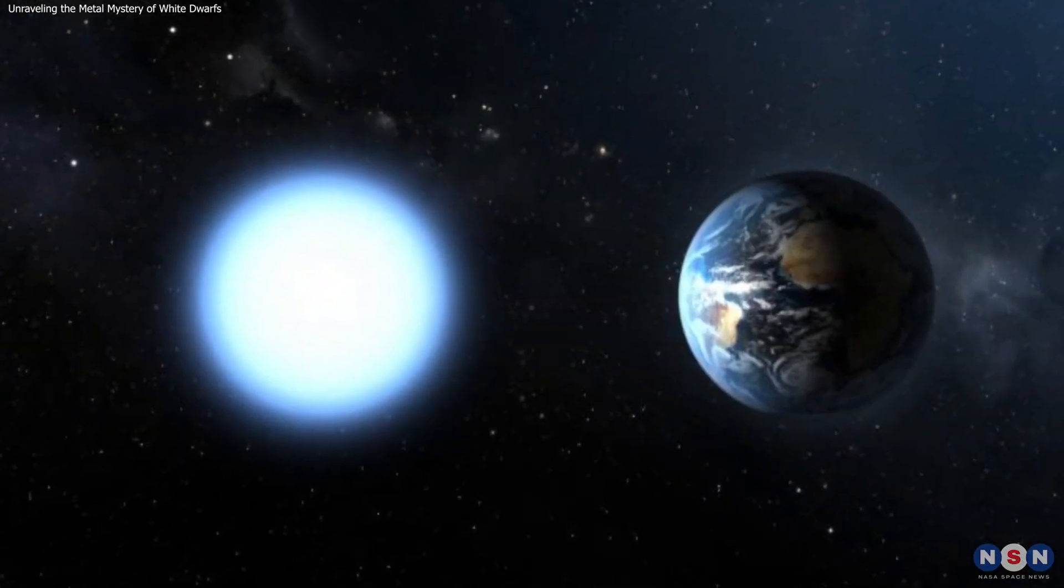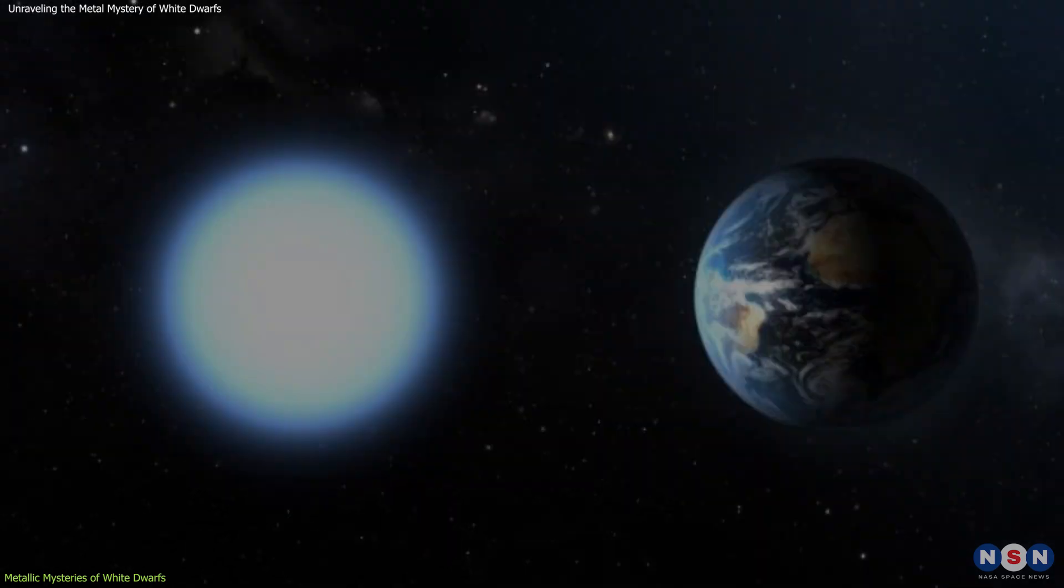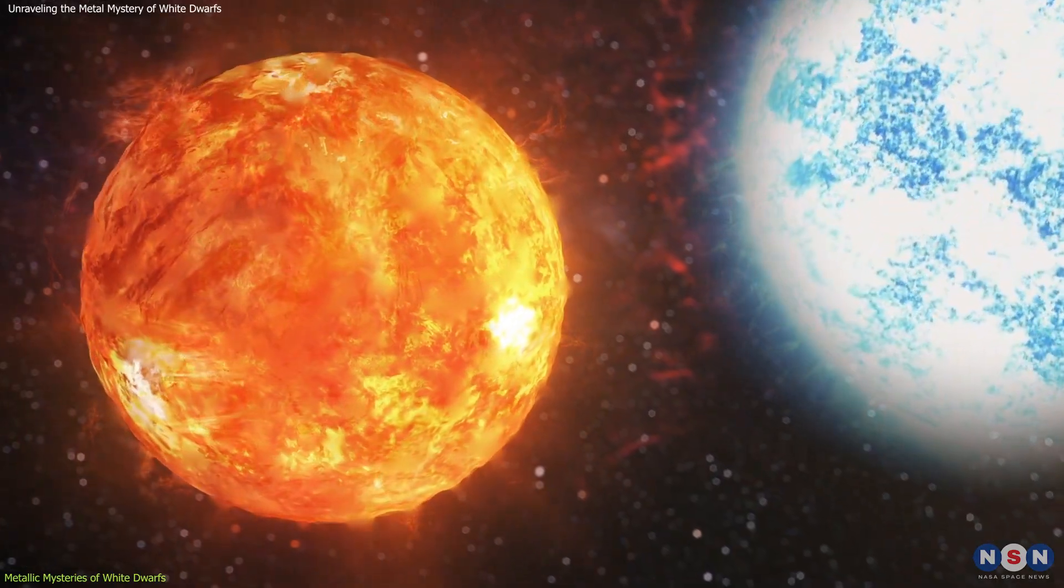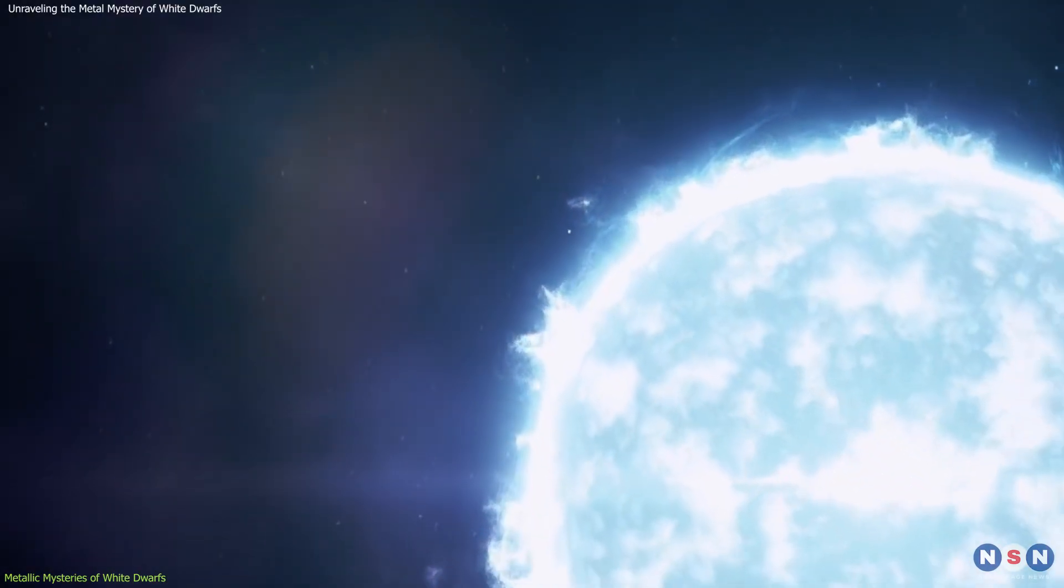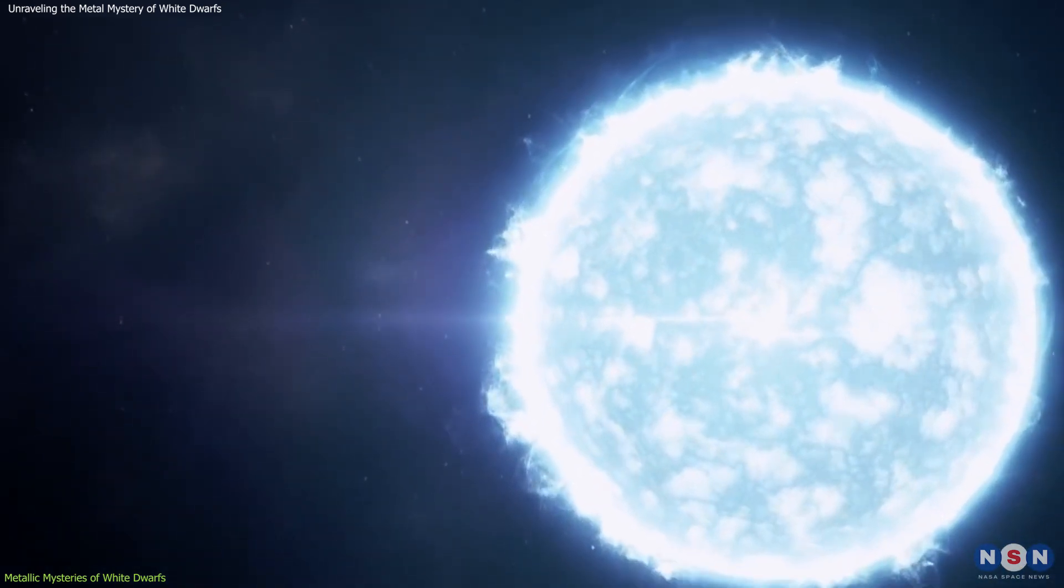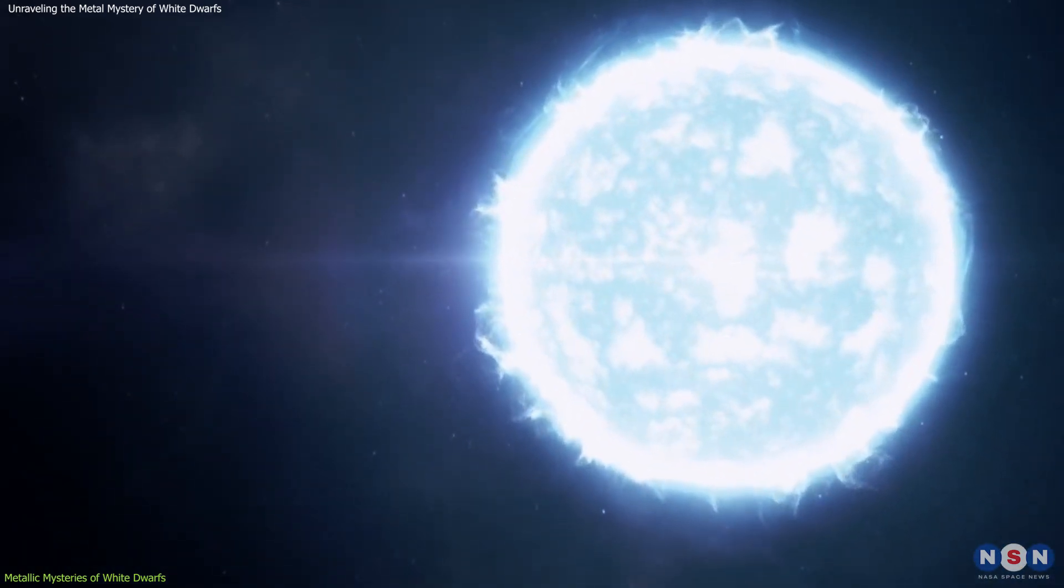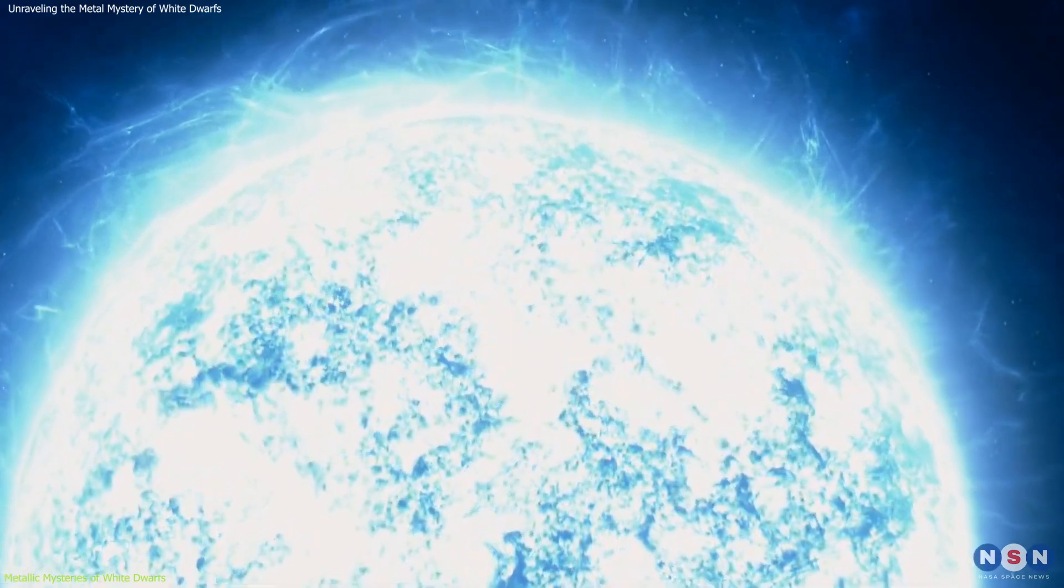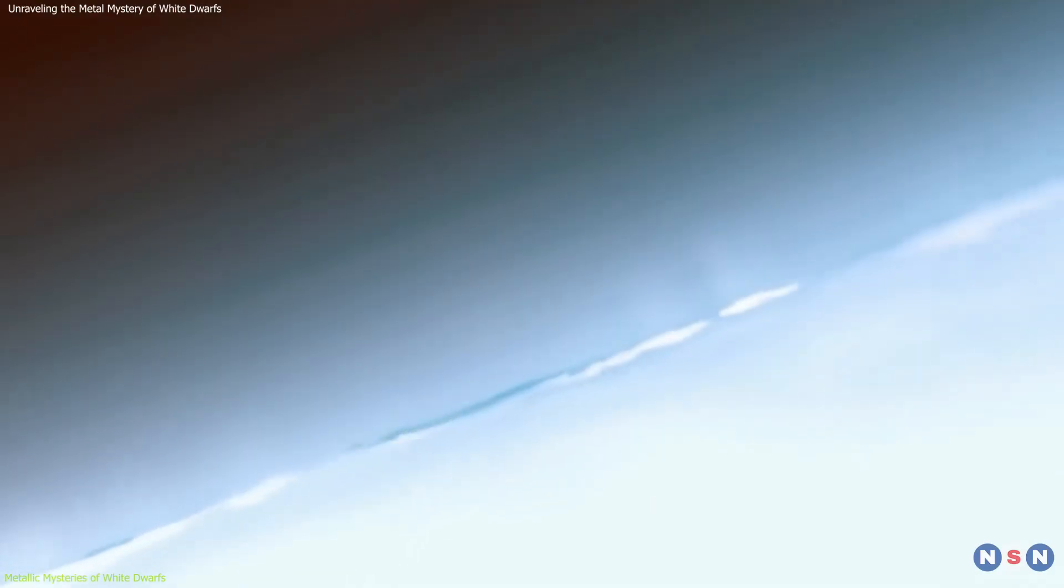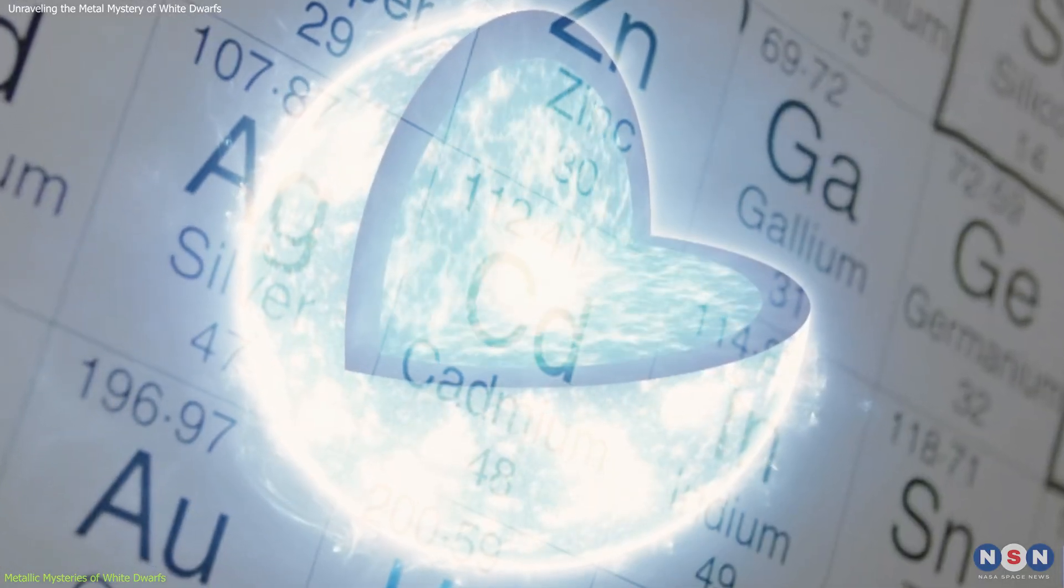White dwarfs are stellar remnants about the size of Earth, but with a mass comparable to the Sun. This combination of small size and large mass creates extreme physical conditions, which have long puzzled astronomers. One perplexing aspect is the composition of their surfaces. Despite their high density...